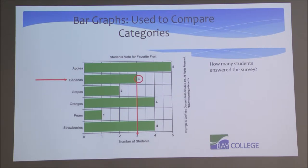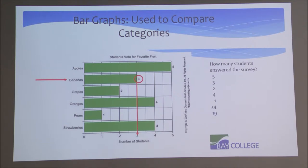Another thing we can do is ask how many students answered the survey. If we sum up the total of each bar, we get the total number of students. Apples had five students, bananas three, grapes two, oranges four, pears one, and strawberries four. Summing those up, we see that 19 students voted on their favorite fruit. We can extrapolate and interpret a lot of information from a single graph.